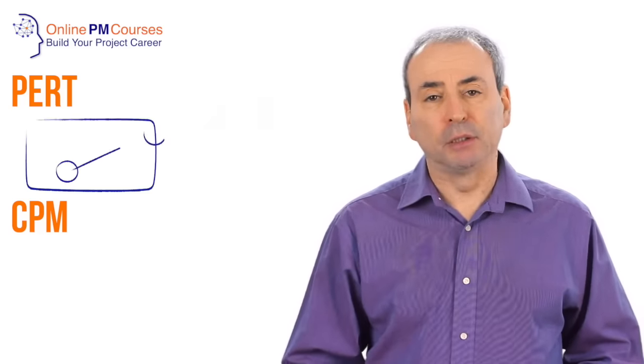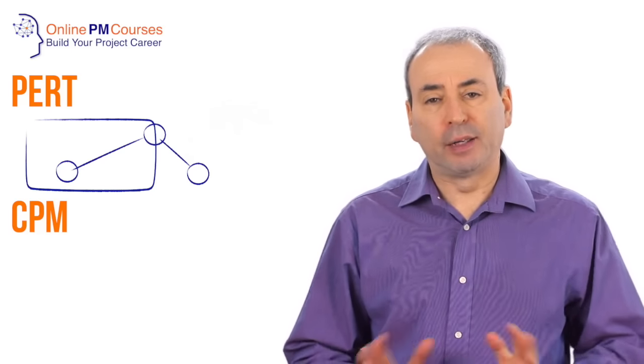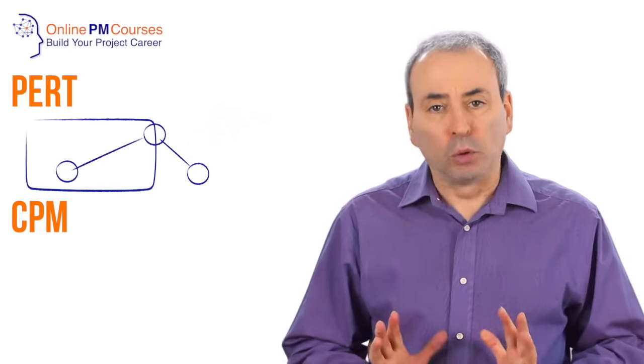The other principal difference between the PERT and Critical Path Methods is that the PERT method uses three-point estimates for the durations of activities, whereas the Critical Path Method, more simply, just takes a single-point estimate.